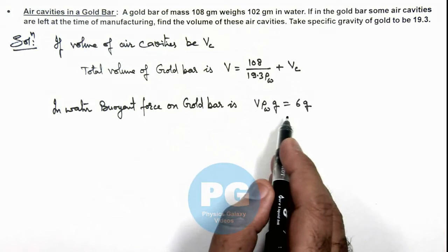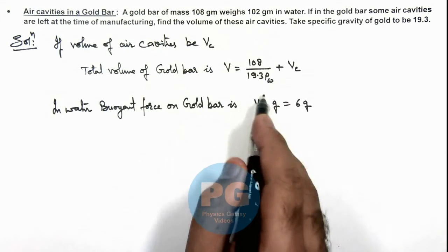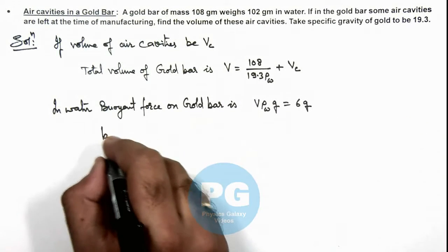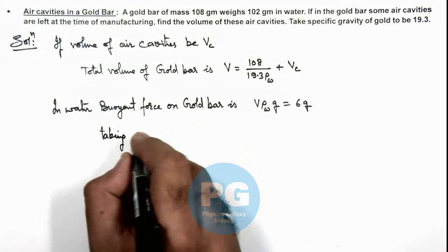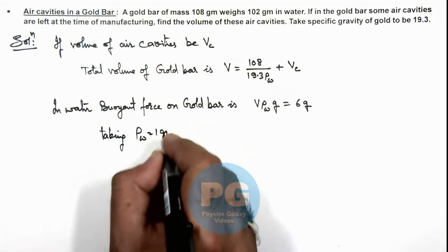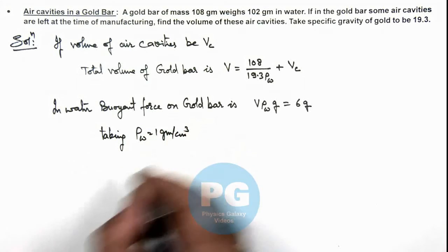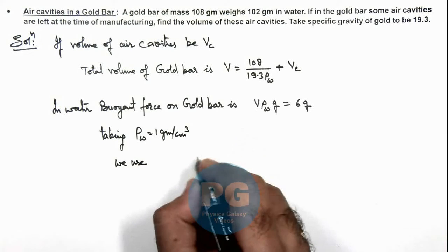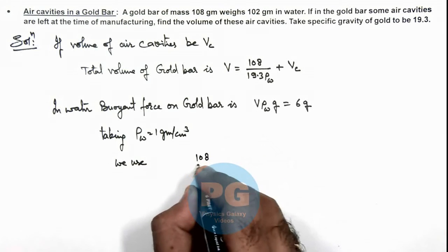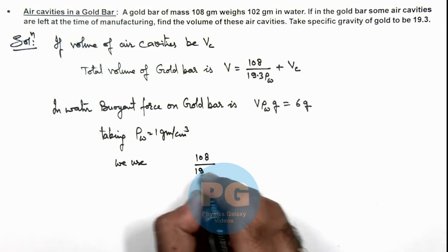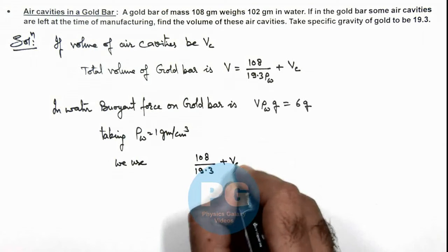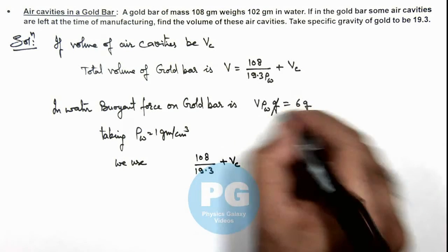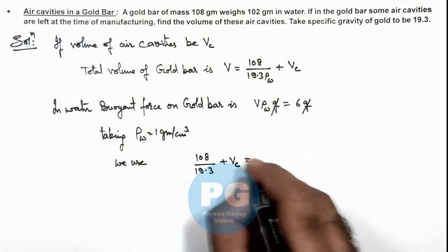So in this situation, we can take in CGS units ρw is equal to 1. Taking ρw equal to 1 gram per centimeter cube, we use in this situation: 108 divided by 19.3 plus Vc, and here g gets cancelled out, should be equal to 6.